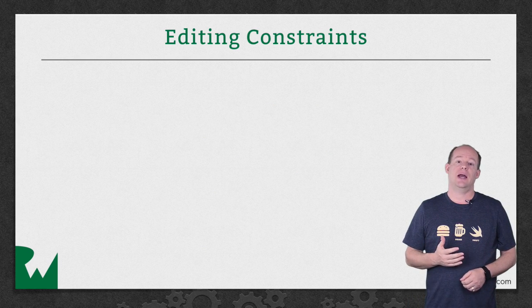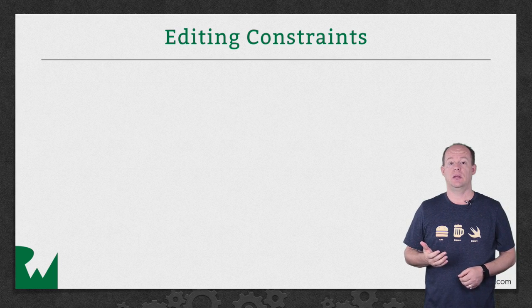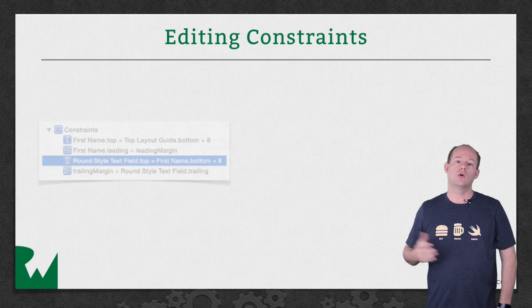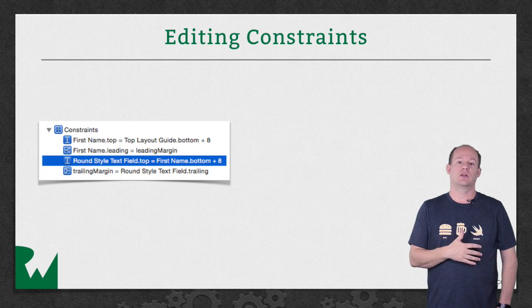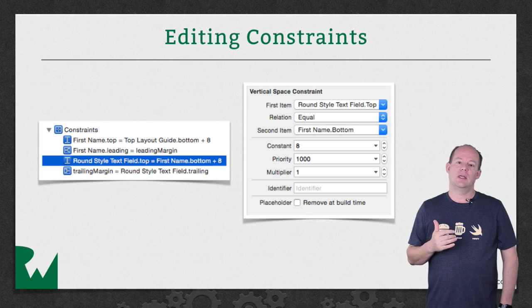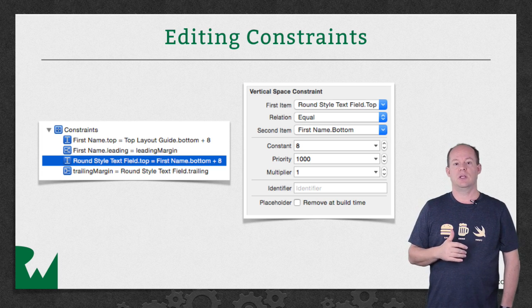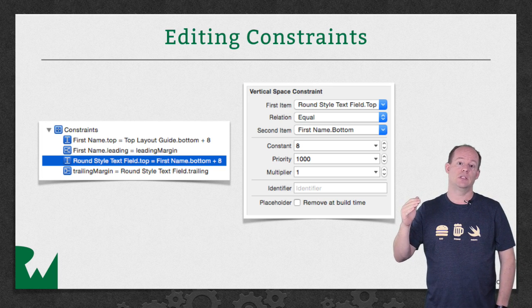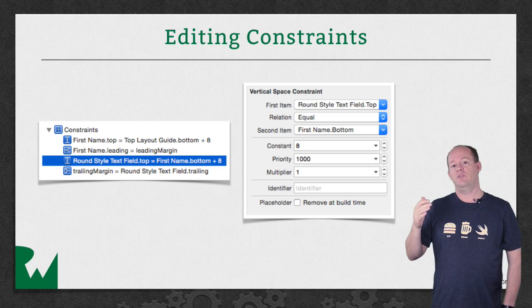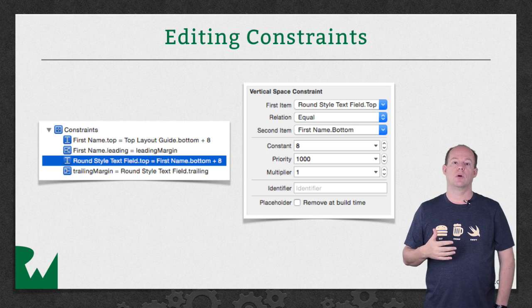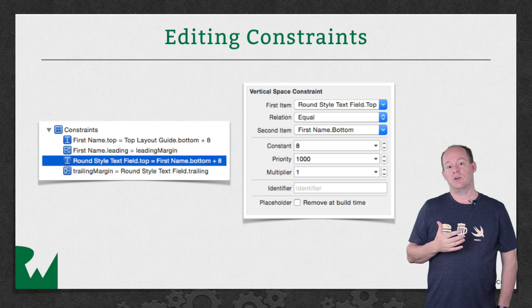The edit button gives you quick access to change the most common parameters of a constraint, but you can also double click on a constraint in the size inspector of a view or just select it in the document outline, and the size inspector will show all the details of the constraint. Note that Interface Builder tries to create constraints with a positive constant value. If you mentally think of the bottom of a label as being negative 8 points from the top of a text view, rather than the text view being 8 points more than the bottom of the label, you can tell Interface Builder to switch the order. It doesn't change how things are laid out — it just allows you to match the constraint with your mental model.